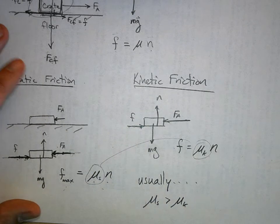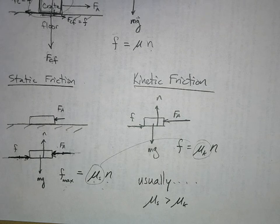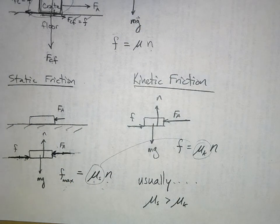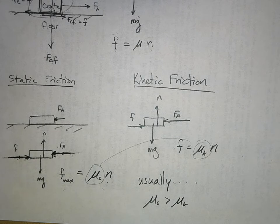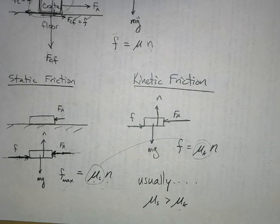Now, why is that? That's a great question, and it's an area of open research in physics and material science. What's probably going on is that when two surfaces are not sliding, there's actually a little bit of weak bonding going on between the two materials. But once they start sliding, there aren't those little weak bonds anymore. Thus, this kinetic friction will be a little bit less.